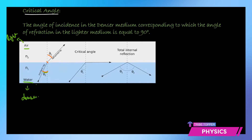So what happens if I go on increasing the angle of incidence? The angle of refraction will also go on increasing. If the ray is incident here, it might bend towards this side. Now if I keep increasing the angle of incidence, a stage comes when the ray going from water enters the lighter medium and the angle of refraction becomes 90 degrees — as you can see, the ray bends at 90 degrees with the normal. So the angle of refraction becomes 90 degrees.